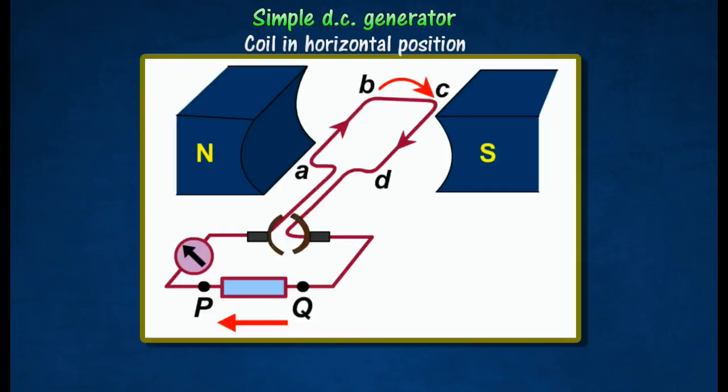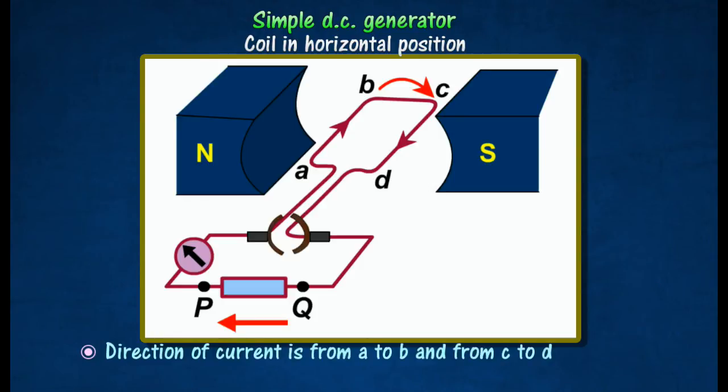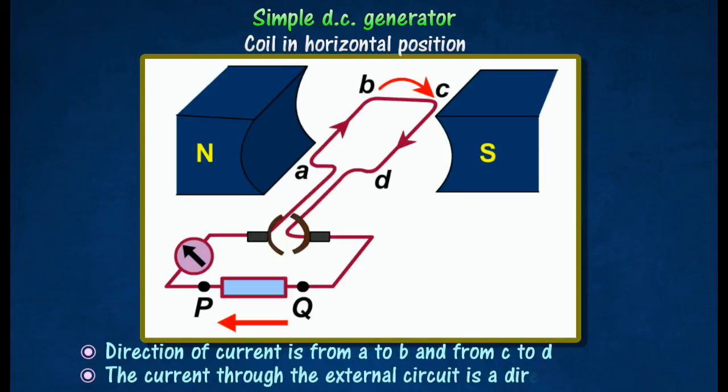As the coil continues to rotate, current will again be induced in the coil, but its direction is from A to B and from C to D. However, the direction of the current through the external circuit remains the same due to the change in the position of the commutator. The current through the external circuit is therefore a direct current.